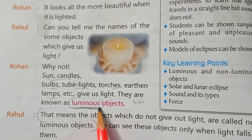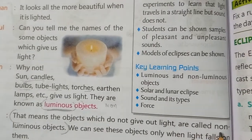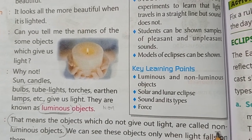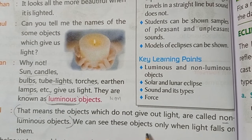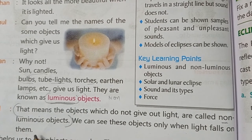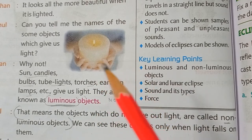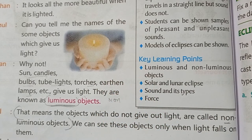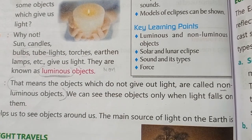So luminous means those that give us light (roshni dene wale), and non-luminous means those that do not give us light. We can see non-luminous objects only when light falls on them — we cannot see them in the dark.